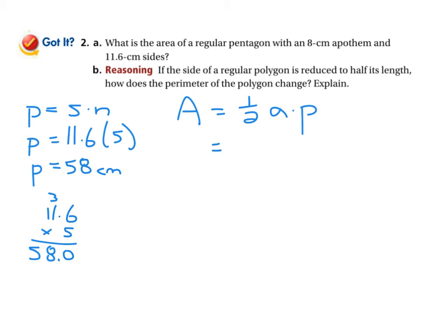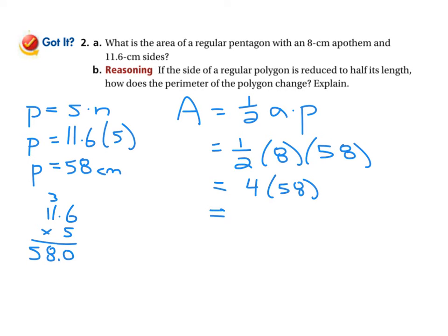The perimeter is 58 centimeters. To calculate the area of the entire figure, we say one half the apothem length — which is eight — times the perimeter, which is 58. Taking one half of eight gives four, then four times 58: four times 50 is 200, and four times eight is 32, giving 232. The units are centimeters and we're talking about area, so it's centimeters squared. The area is 232 centimeters squared.